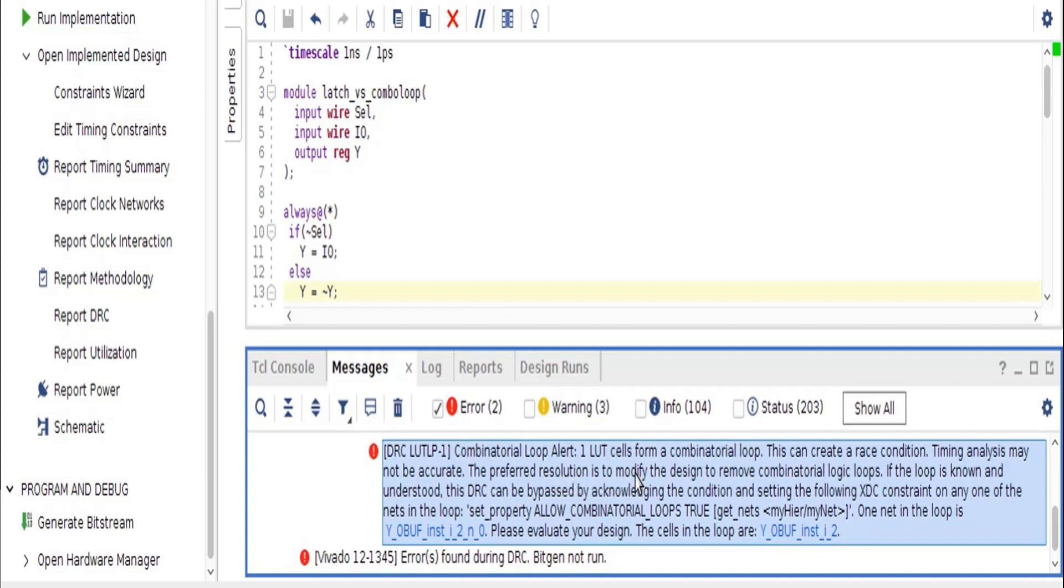But here it is also saying that if this combinational loop is intentionally introduced, then you can set this property 'allow combinational loops true,' and it is asking us to evaluate our design.